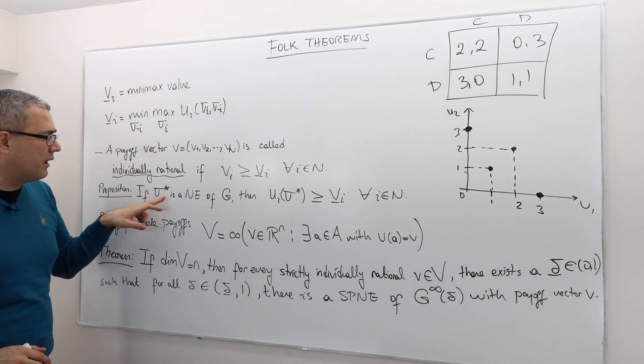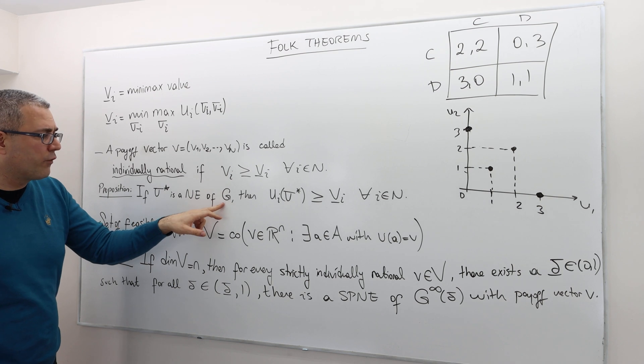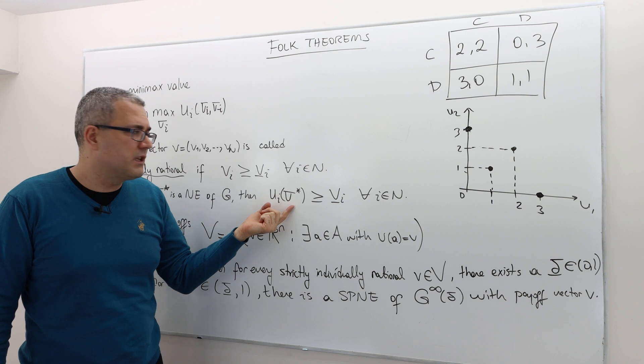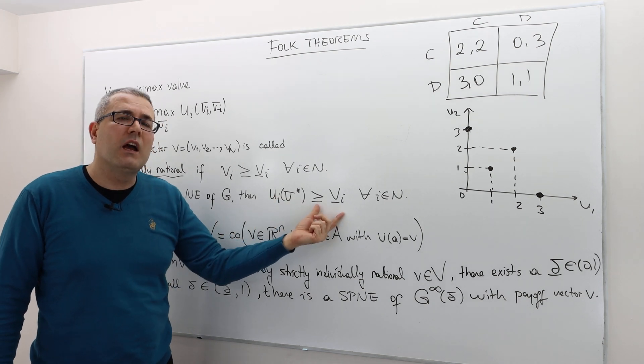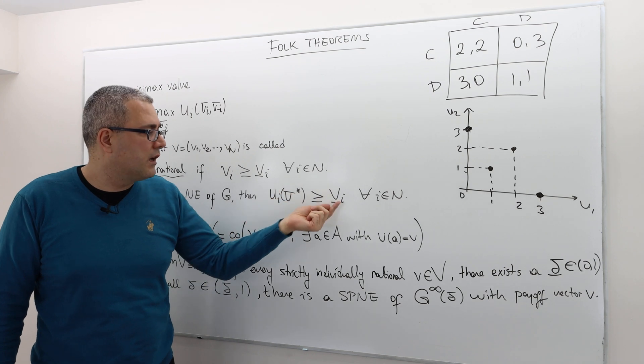So if a strategy profile sigma star is a Nash equilibrium of some strategic form game G, well, then each player under this strategy profile sigma star must be receiving higher or equal to his or her min-max value.